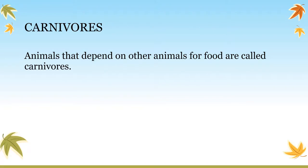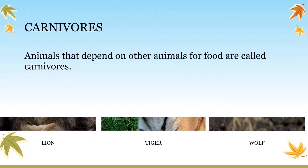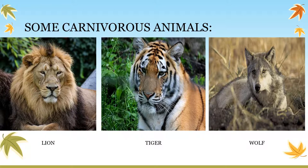Now let's discuss carnivores. Carnivores are those animals that depend on other animals for food — that is, they mostly hunt other animals and eat their flesh. Lion, tiger, and wolf are examples of carnivore animals, as they hunt other animals and feed on their flesh. Because these animals eat meat only, they are called carnivores.